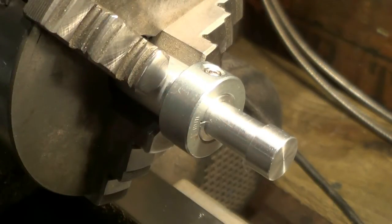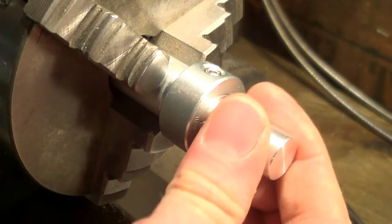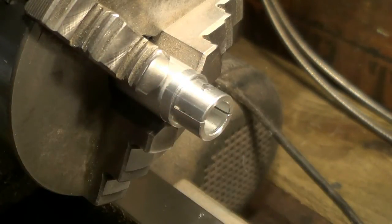This collet is made from aluminum, which is perfectly adequate for most jobs. You don't need to make it from steel. Split collets are a really useful way of holding stuff. Hope you found that interesting. Thanks for watching.